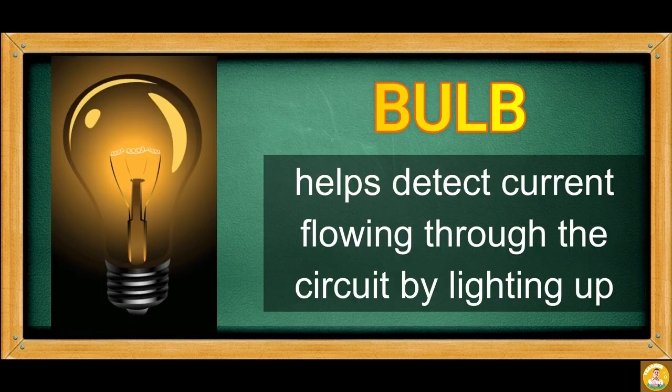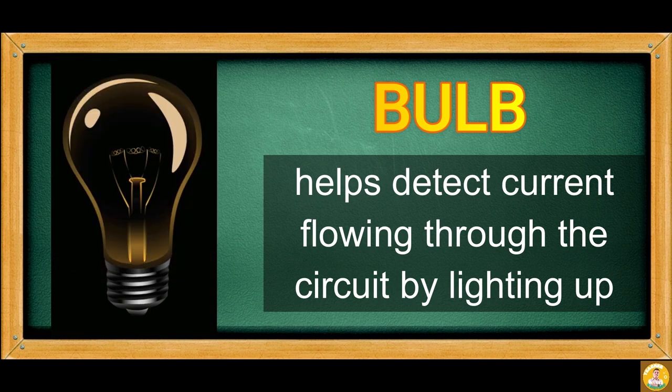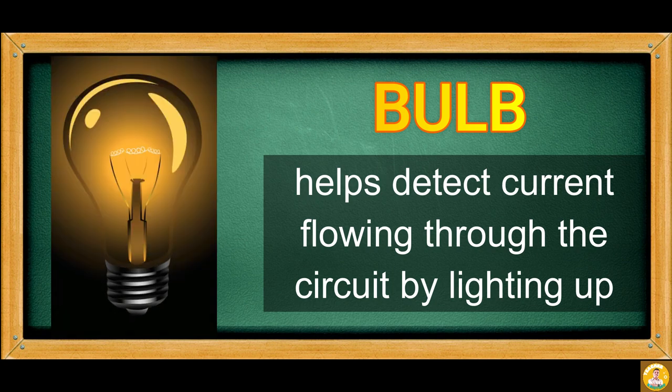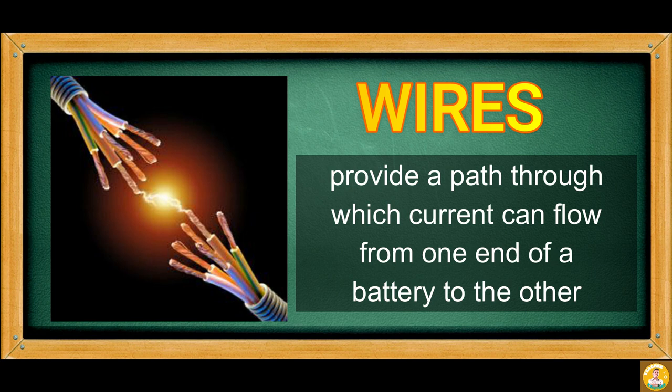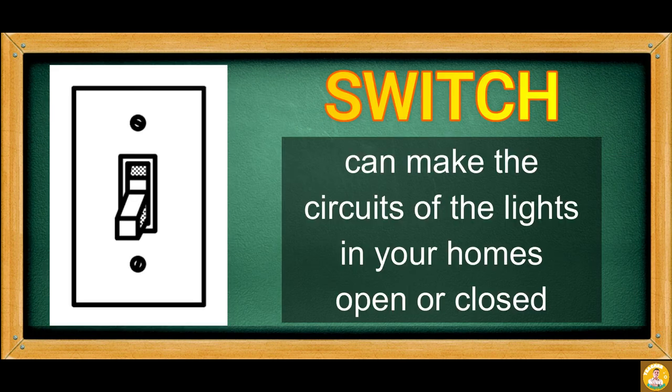The bulb helps detect current flowing through the circuit by lighting up. The battery provides energy to the components in the circuit. Wires provide a path through which current can flow from one end of a battery to the other. And the switch can make the circuits of the lights in your homes open or closed.